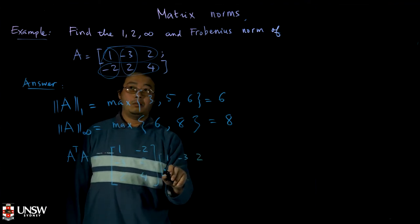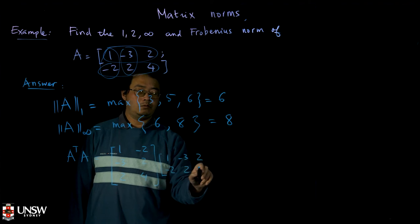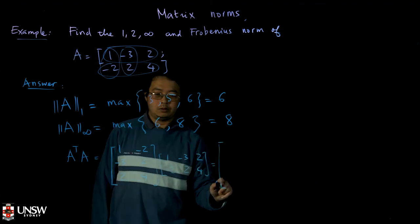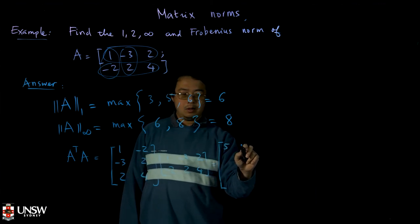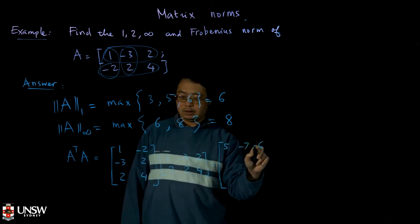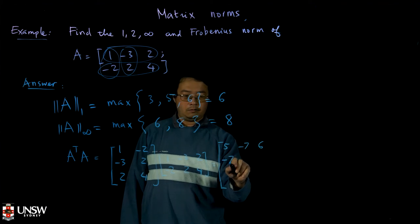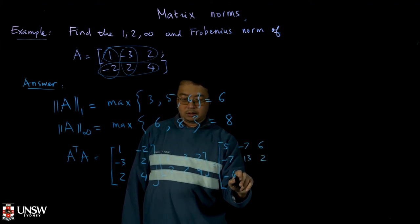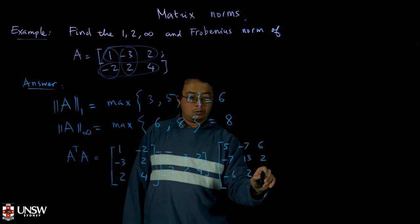minus 2, 2, 4. And it will give you the square matrix: 5, minus 7, 6, minus 7, 13, 2, minus 6, 2, 20.